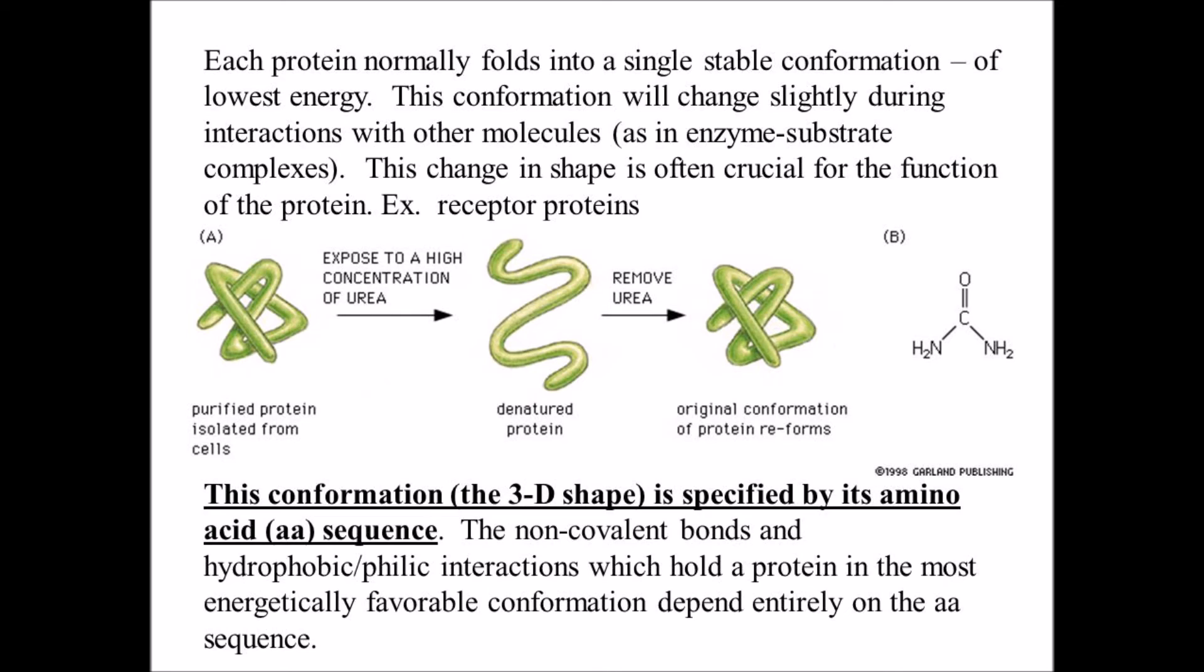Although a protein chain can fold into its correct conformation without outside help, protein folding in a living cell is generally assisted by special proteins called chaperone proteins. Some of these chaperones bind to partly folded chains and help them to fold along the most energetically favorable pathway. Others form isolation chambers in which single polypeptide chains can fold without the risk of forming aggregates in the crowded conditions of the cytoplasm. In either case, the final three-dimensional shape of the protein is still specified by its amino acid sequence. Chaperones merely make the folding process more efficient and reliable.